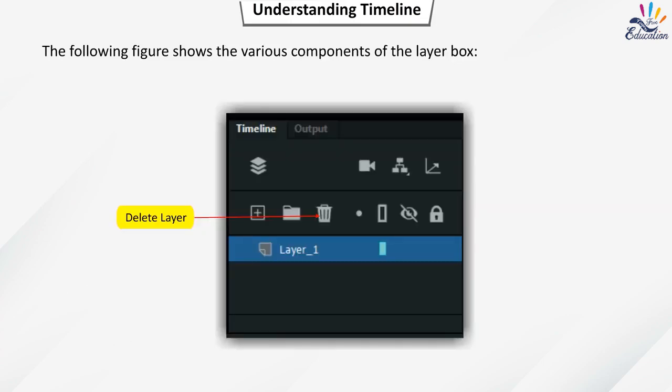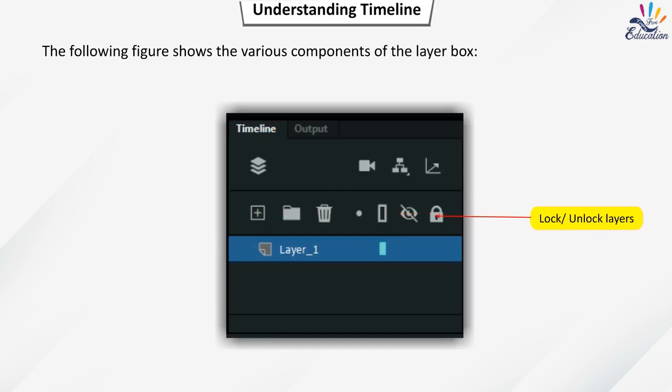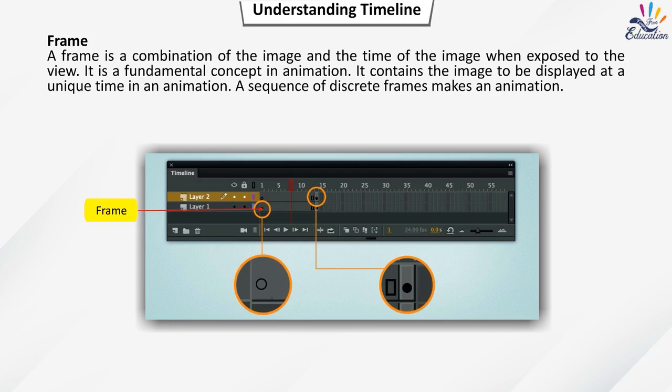The layer box components include: Delete Layer, Add a New Layer, Current Layer, Show Layers as Outlines, Lock or Unlock Layers, and Show or Hide Layers.